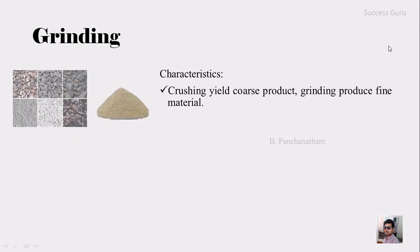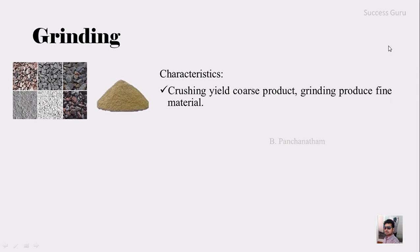The following are the characteristics of grinding. The first thing is that crushing will produce a coarse product, whereas grinding will produce fine material. As we saw in our previous class, crushing produces a coarser-sized product, and if you are looking for a finer product then you have to go for grinding. This is the difference between crushing and grinding.